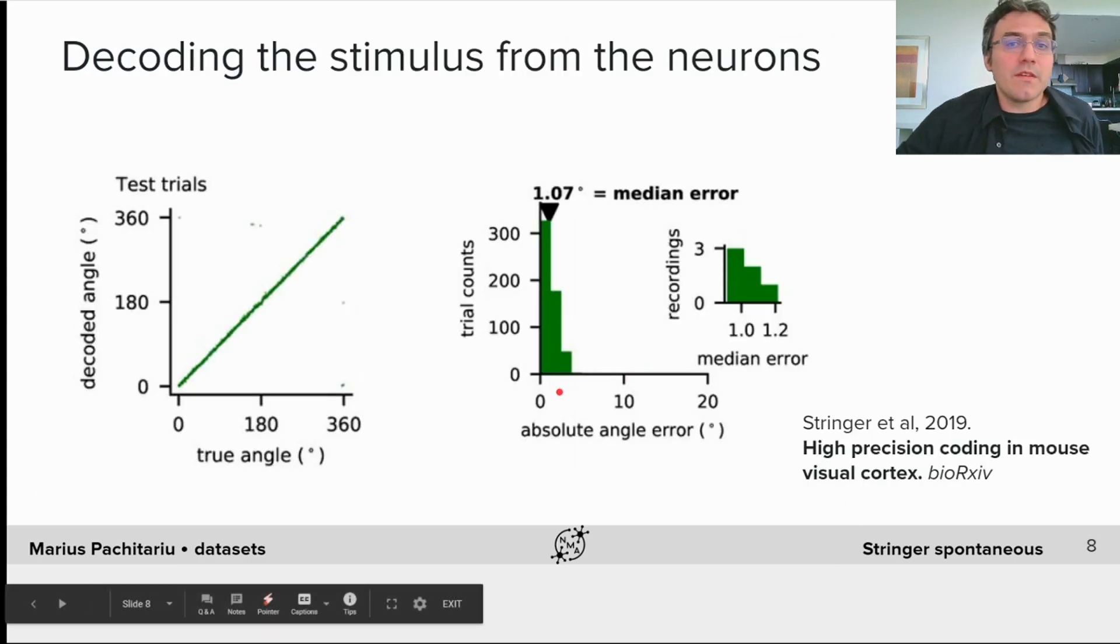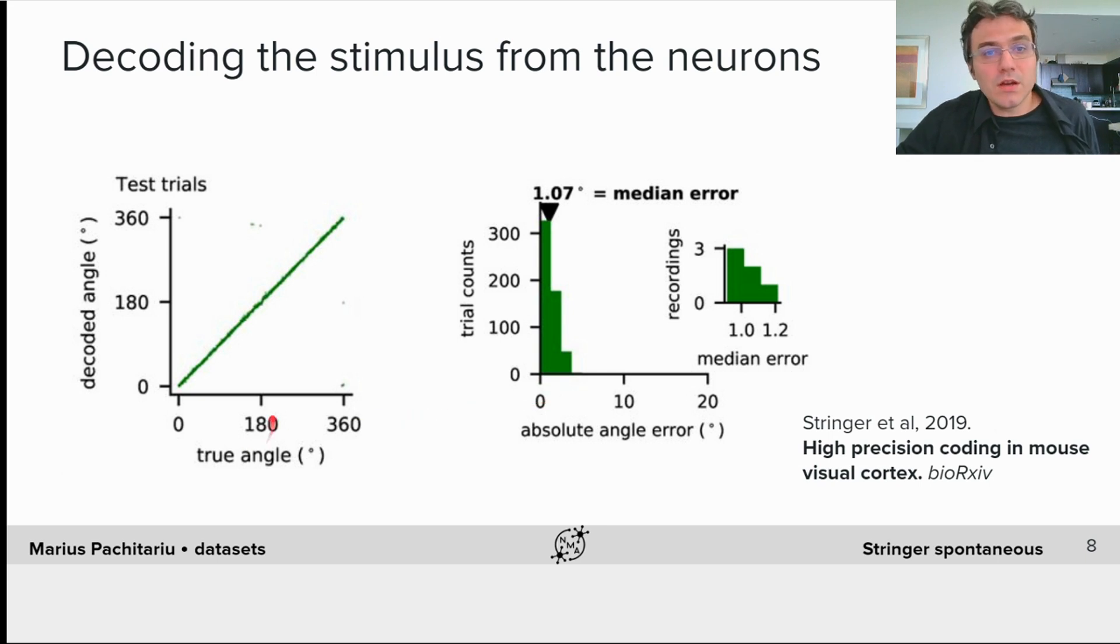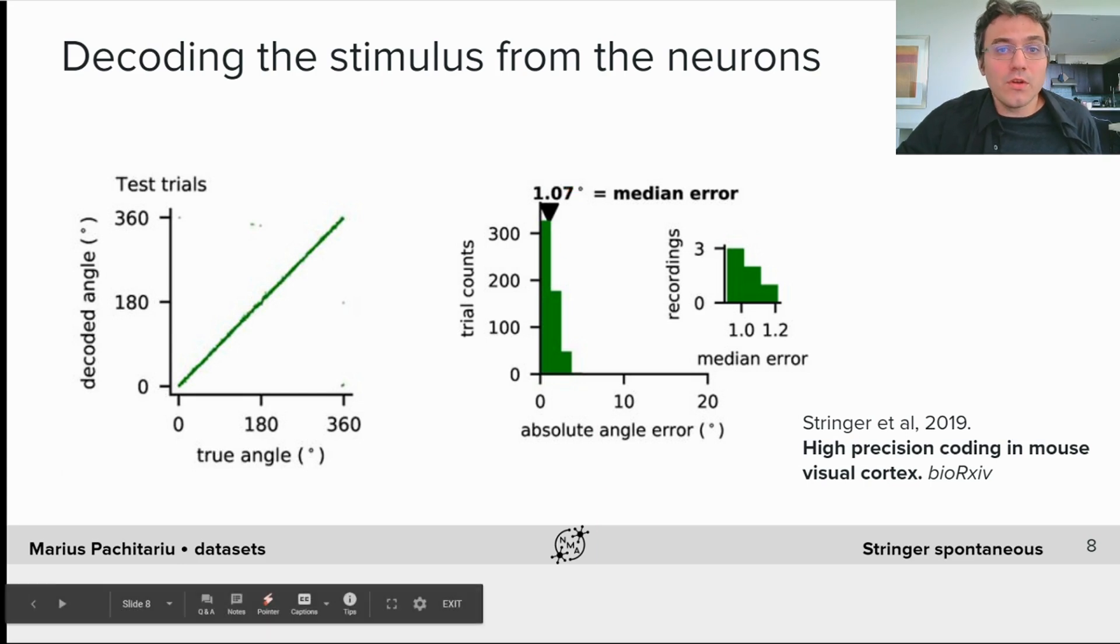Even though single neurons are variable like that and noisy, the population as a whole actually encodes the stimulus very precisely. You can use your favorite decoding approach to show this, as we did in the paper, to get decoding accuracies of the stimulus on the order of one degree of error or even less. You can go to the full paper to learn more, or you can start exploring the dataset on your own.